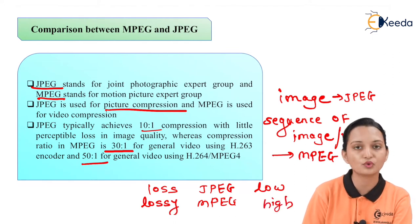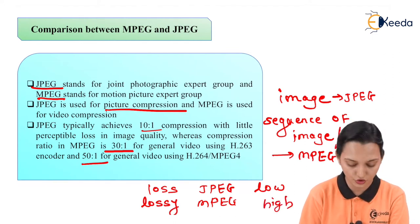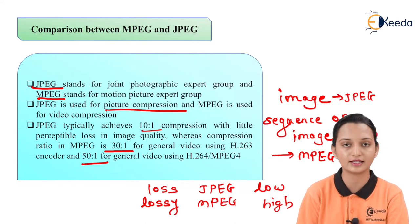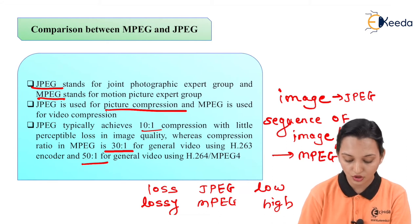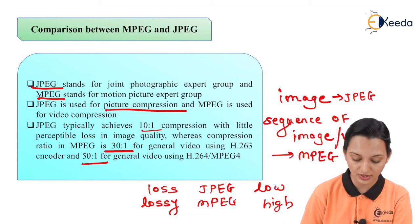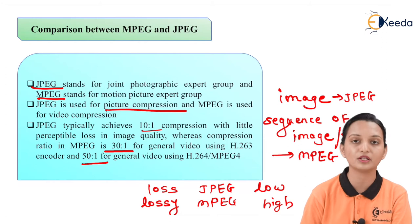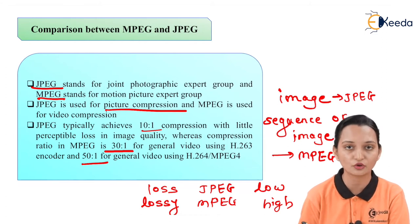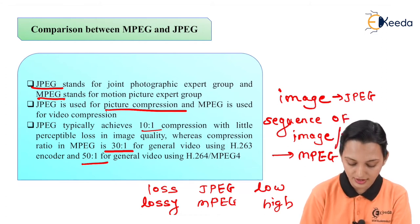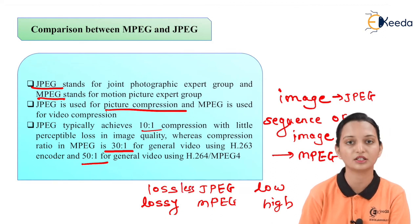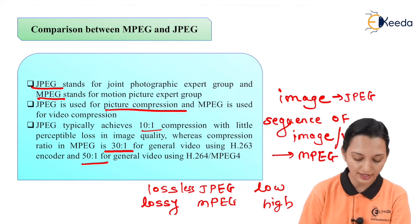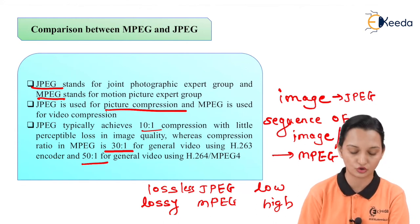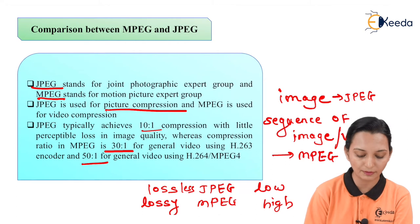MPEG is known as a lossy compression technology, while in JPEG the loss of data is very low. So if we observe efficiency, JPEG will have higher efficiency compared to MPEG because it is essentially a lossless technology — the loss is very low. MPEG, on the other hand, is a lossy technology.